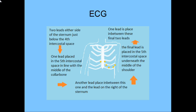Now, before we talk about the cardiac cycle, let's just quickly make a few notes on the ECG and where the leads are placed. To start off, we have two leads placed either side of the sternum, just below the fourth intercostal space — that means the space in between your ribs as you feel them. Now one lead is placed in the fifth intercostal space, inline with the middle of the collarbone. Another lead is placed in the fifth intercostal space, underneath the middle of the shoulder.